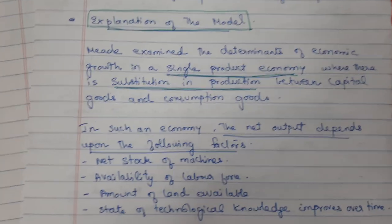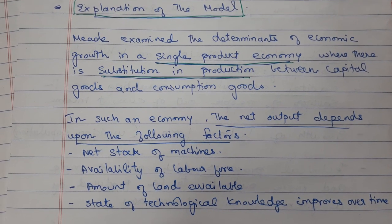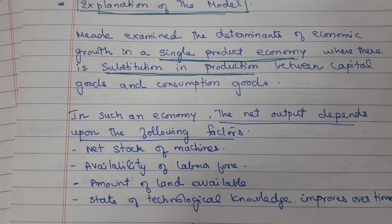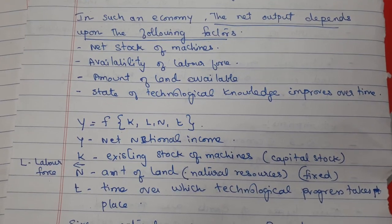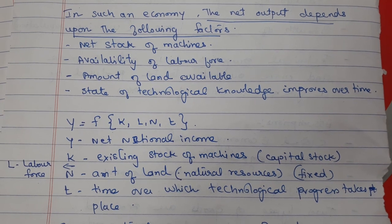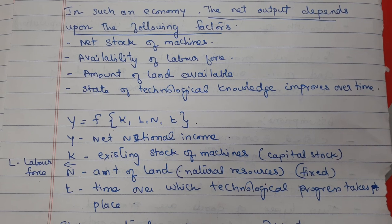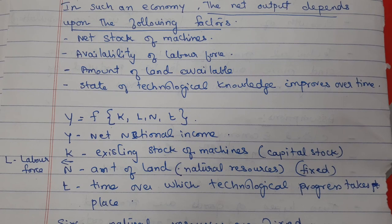Meade examined the determinants of economic growth in a single product economy, where there is substitution in production between capital goods and consumption goods. In such an economy, the net output depends upon: net stock of capital, availability of labour force, amount of land available, and state of technology — that is, technical knowledge, which improves over time.